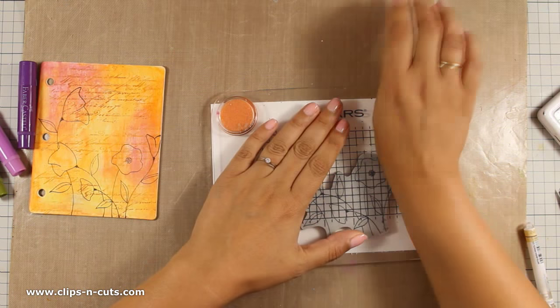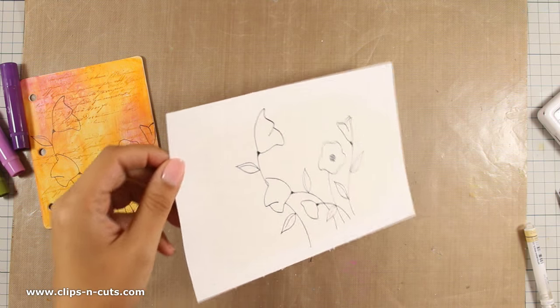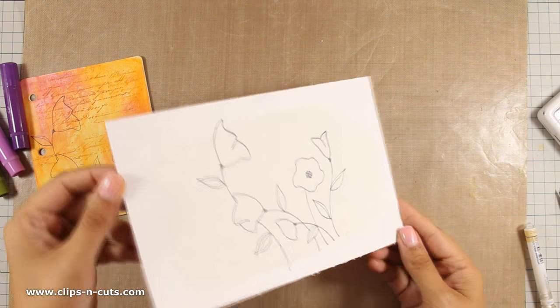When the gesso is dry, I stamp again using archival ink, and now I have a good impression of the flowers and the leaves.